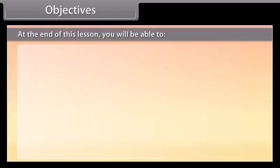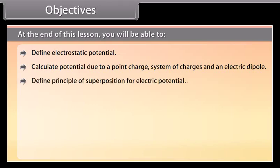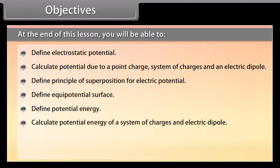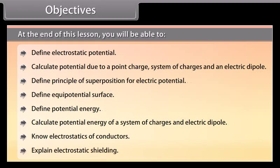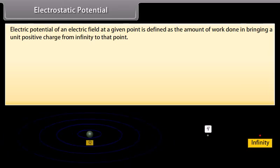At the end of this lesson, you'll be able to: define electrostatic potential; calculate potential due to a point charge, system of charges, and an electric dipole; define the principle of superposition for electric potential; define equipotential surface; define potential energy; calculate potential energy of a system of charges and electric dipole; know electrostatics of conductors; and explain electrostatic shielding. Electric potential of an electric field at a given point is defined as the amount of work done in bringing a unit positive charge from infinity to that point.